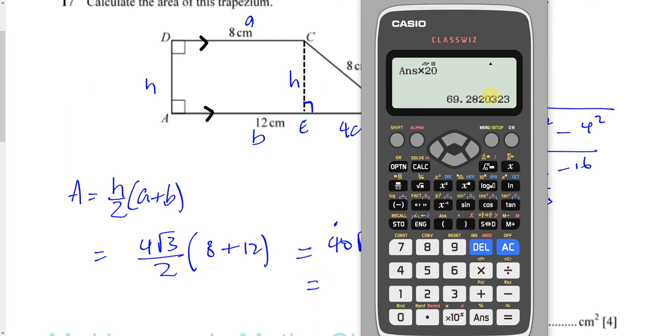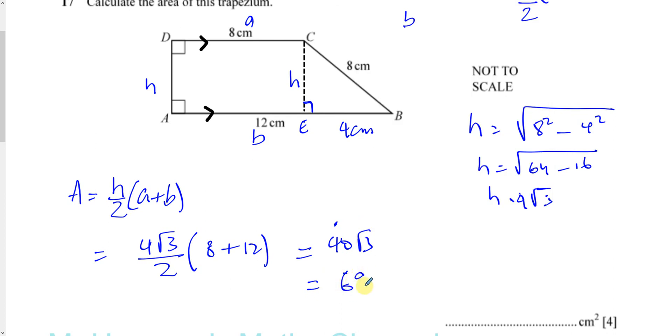We have to give our answer to 3 significant figures. Press the standard button, which gives us 69.282. Why do we write our answer to 3 significant figures? Because on the instructions page at the beginning of the paper, it mentions all answers that are not exact should be rounded to three significant figures. So this is 69.3 cm²—there we have the area of the trapezium.